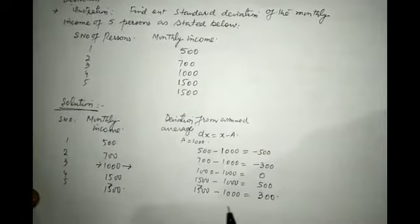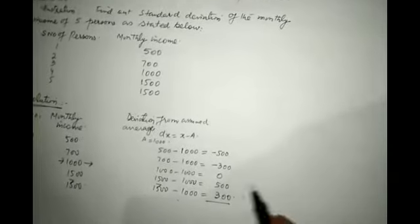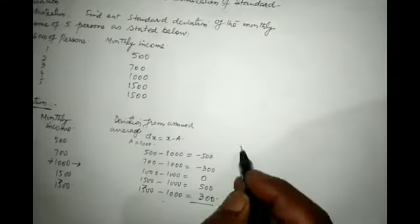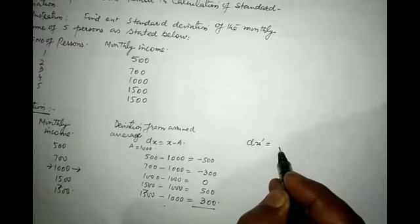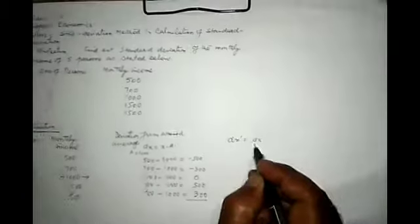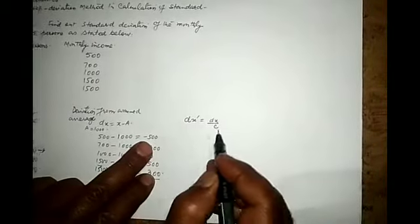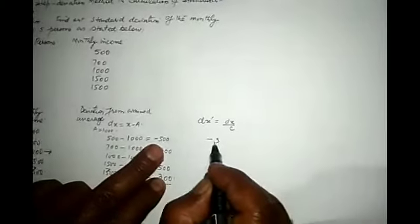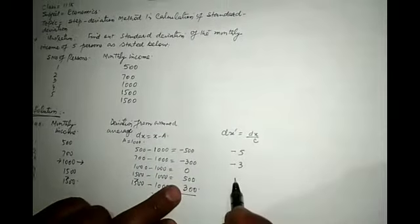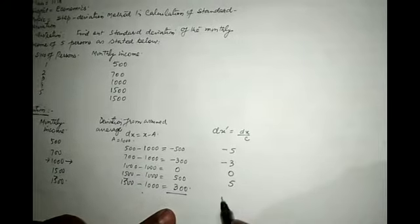Therefore summation of dx, dx dash is equal to dx divided by c, common factor. c would be equal to 100. Now this will be equal to minus 5, this will be equal to minus 3, this will be equal to 0, this will be equal to 5, this will be equal to plus 3, that is equal to zero.